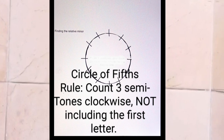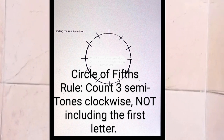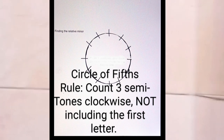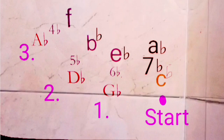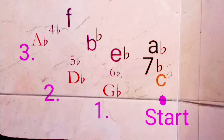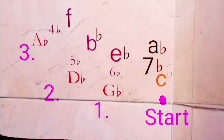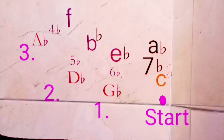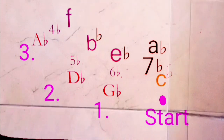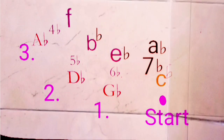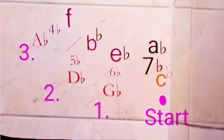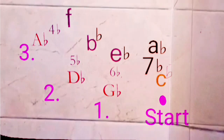Always count three semitones clockwise and do not include the first letter when using the circle of fifths. For the first example, C-flat major has seven flats. You start and count one, two, three — you end up on A-flat. A-flat is the relative minor of C-flat major.